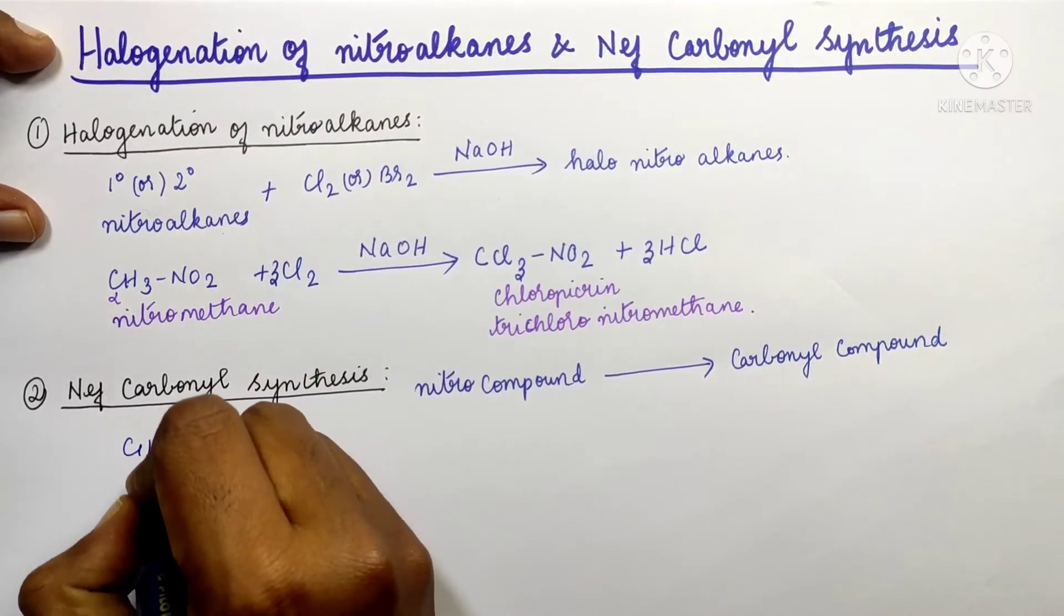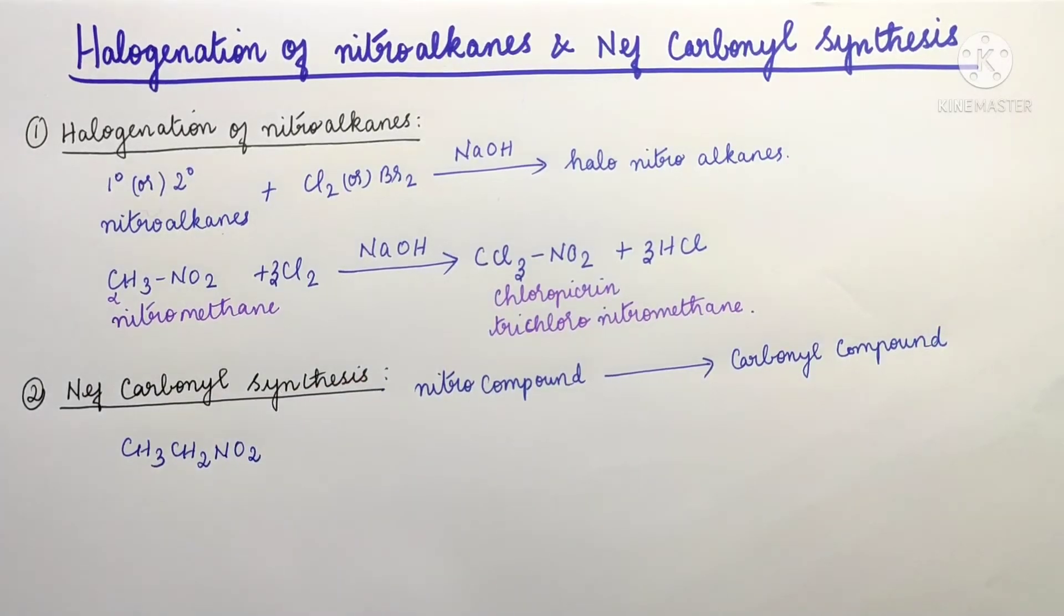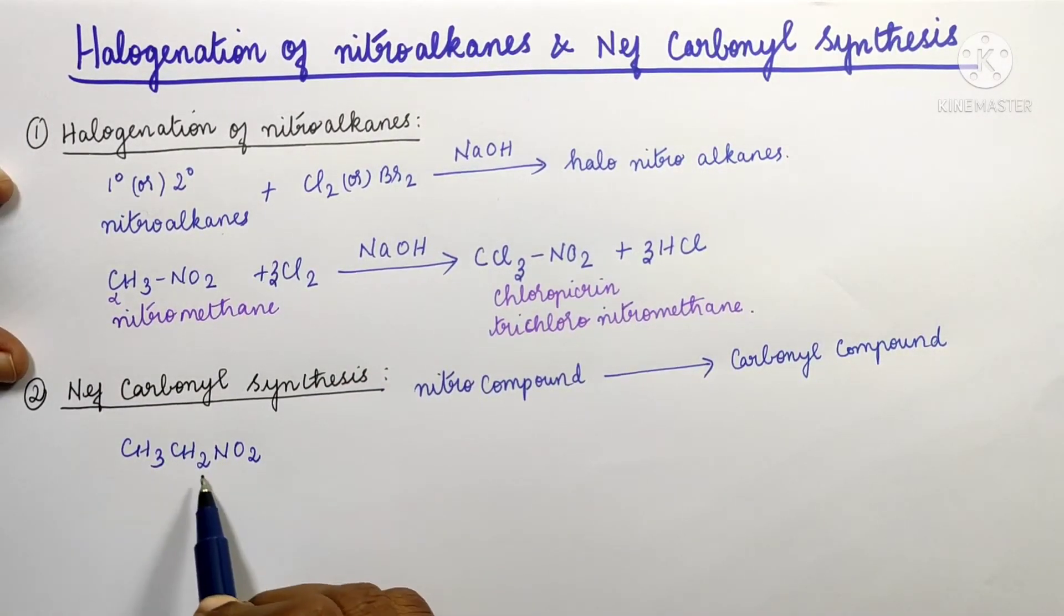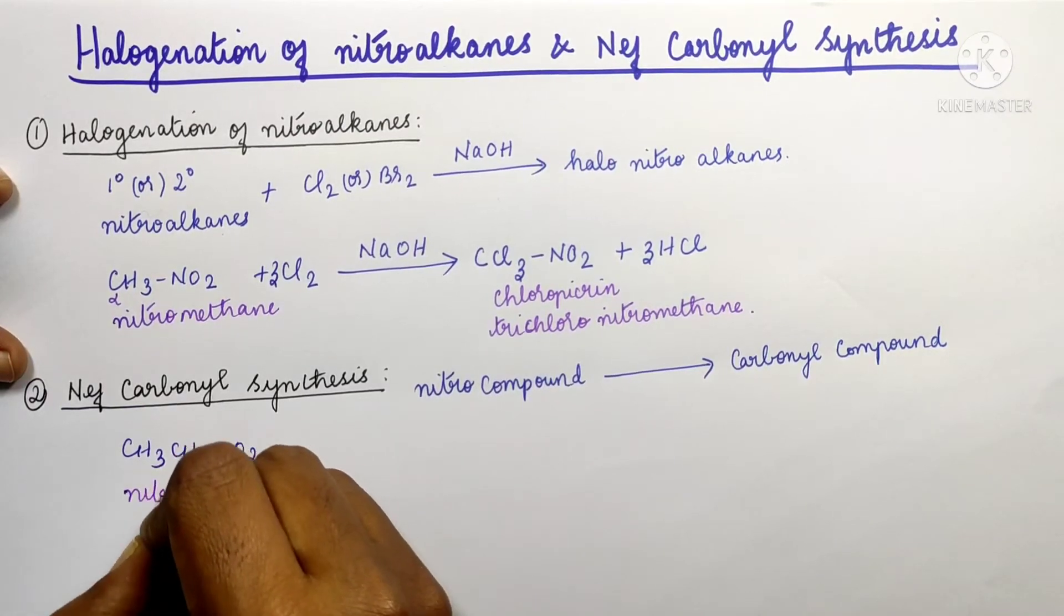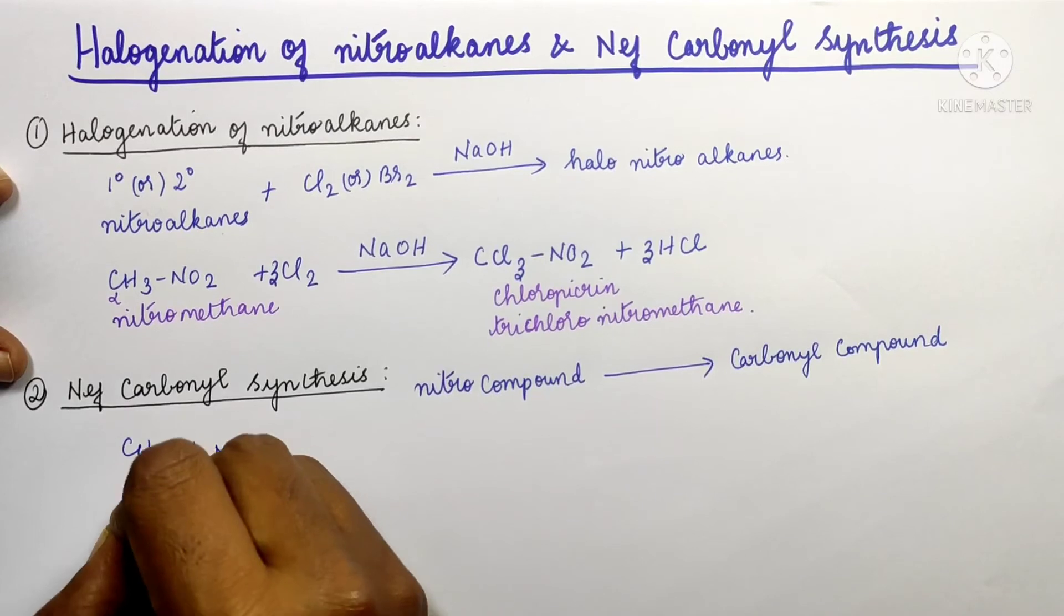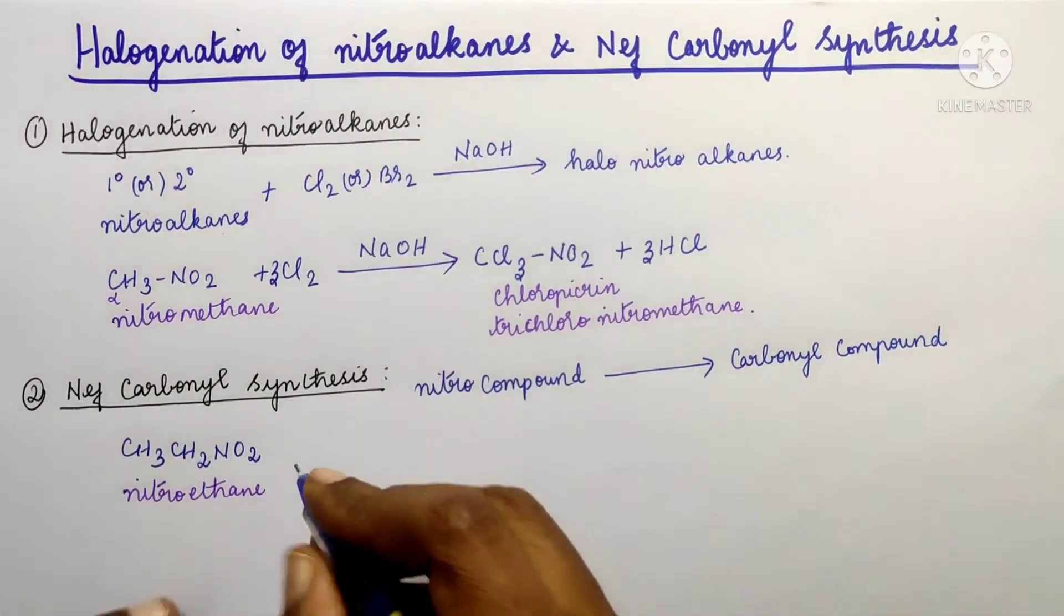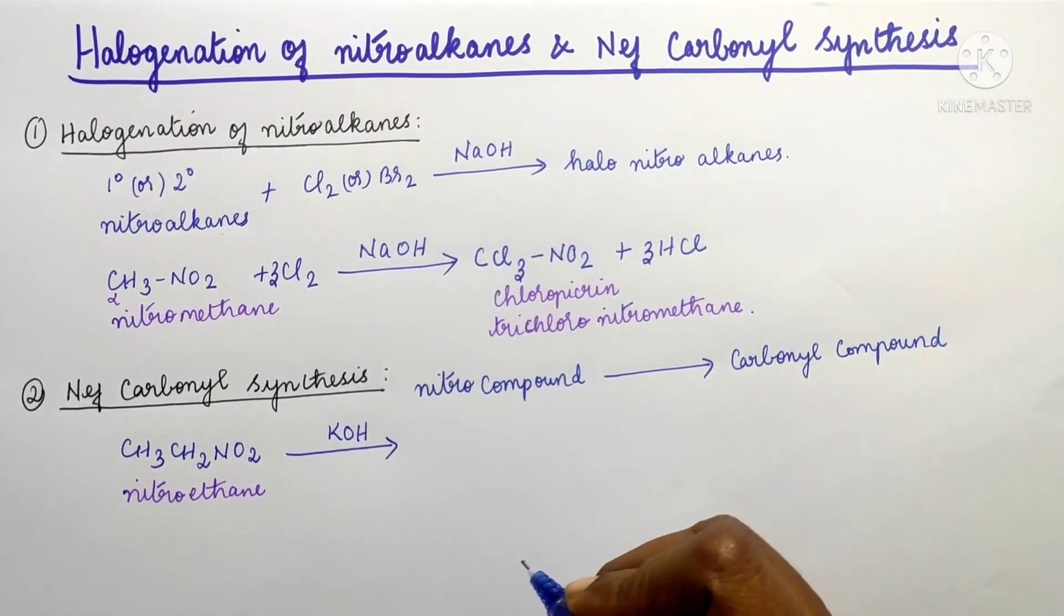A specific example is CH3CH2NO2, which is called nitroethane because it has NO2. In nitroethane, potassium hydroxide is added.